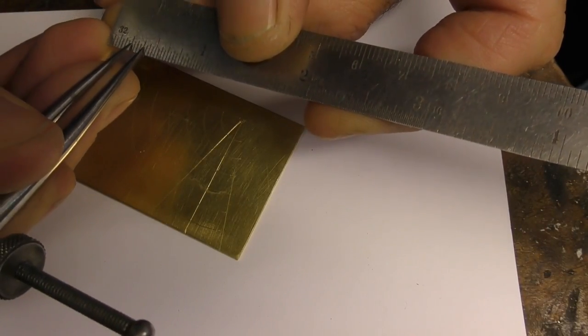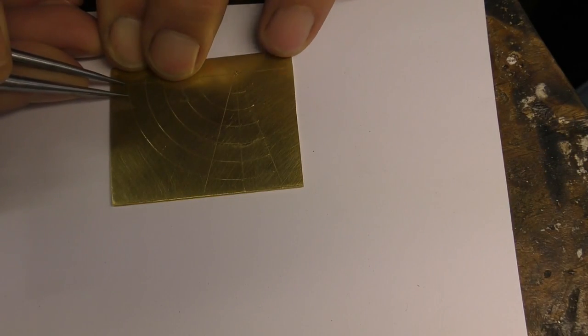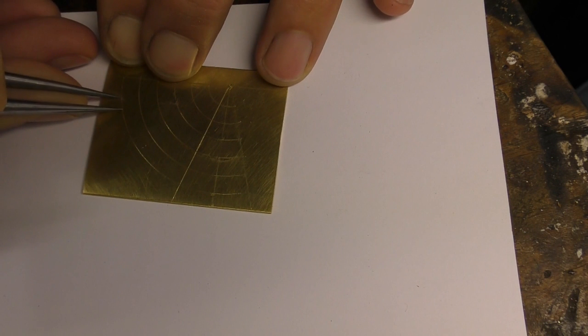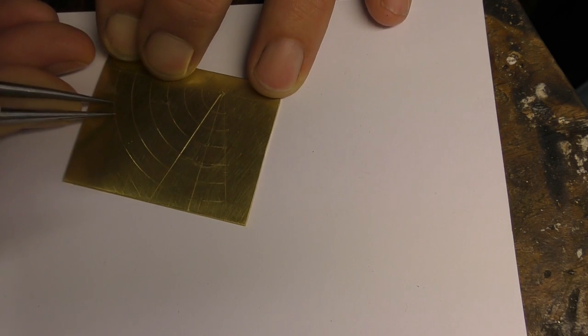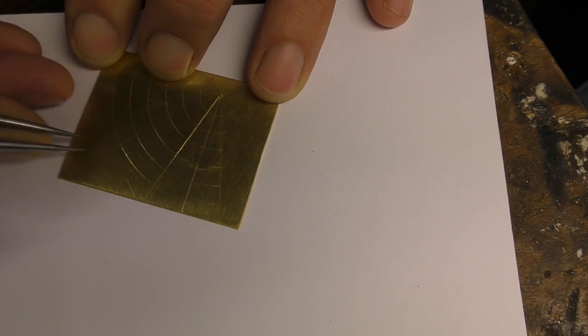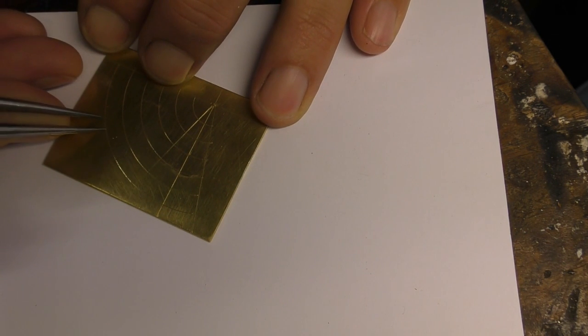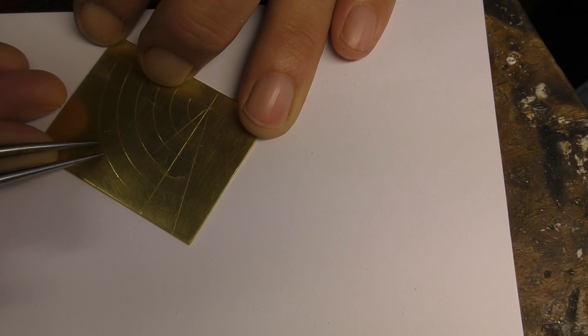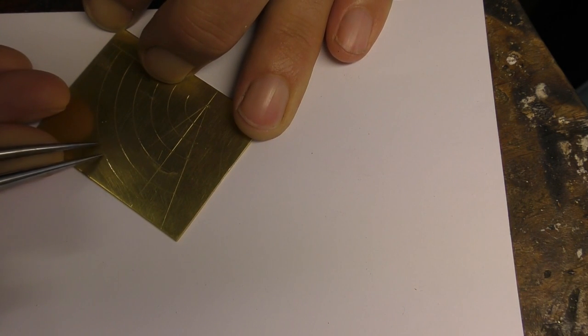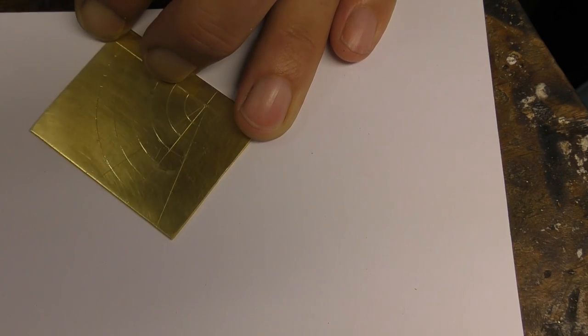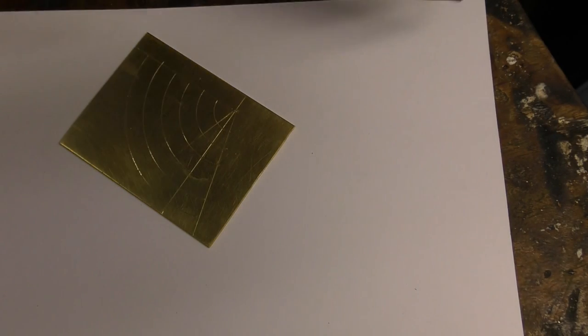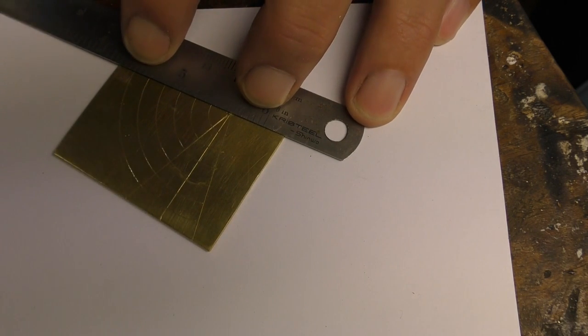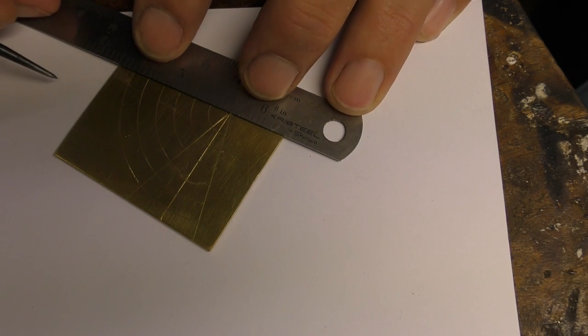Now set your dividers to three millimeters and mark off from the top arc all the way to the angled line. And scribe from those points right to the center punch mark. Take your time so that all the lines are scribed correctly.